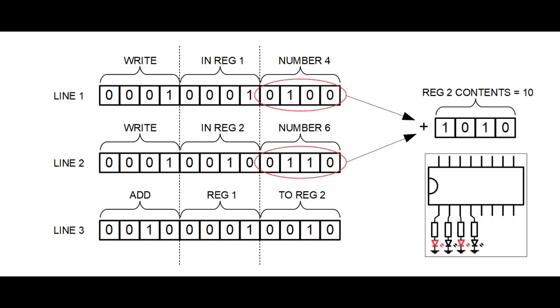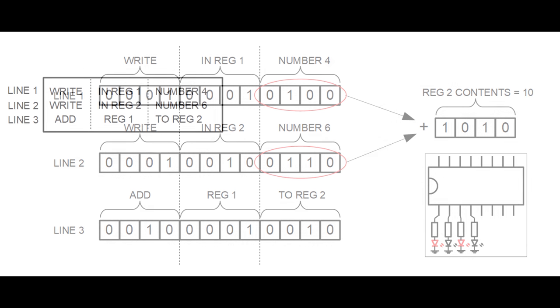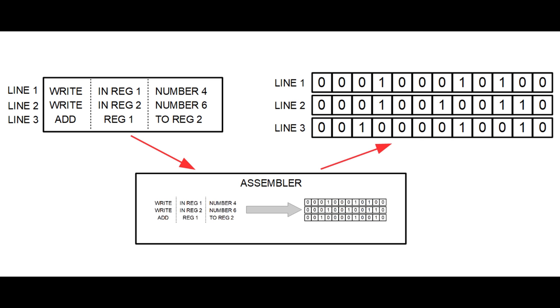If we remove the binary codes and leave only the written words, we get something similar to assembly language — a very low-level programming language. It would be very difficult for a human to memorize what each string of zeros and ones means, so people replaced them with written words and numbers that are far more meaningful. To burn an assembly program into a microcontroller, we use something called an assembler, which converts the assembly code into zeros and ones that the microcontroller can understand.